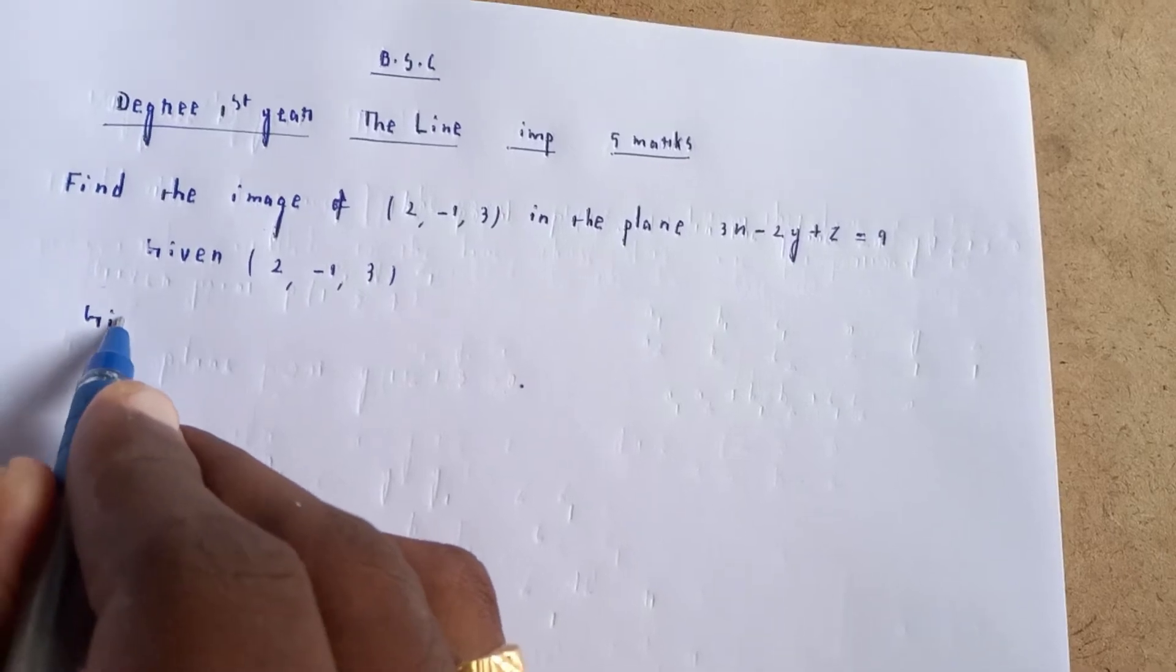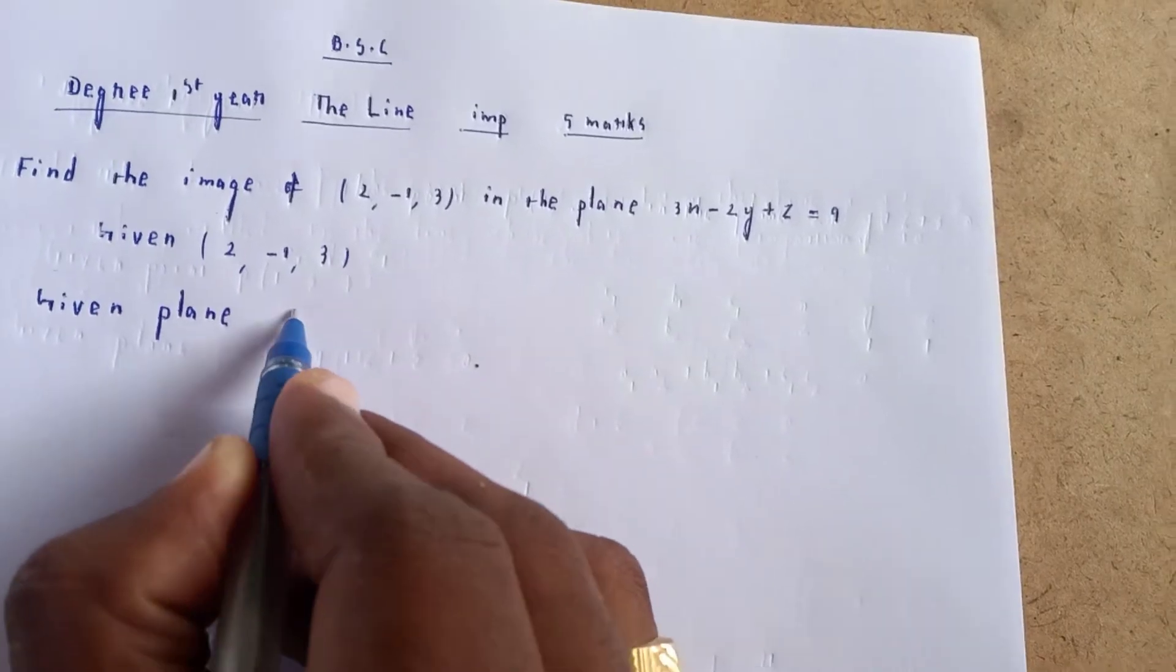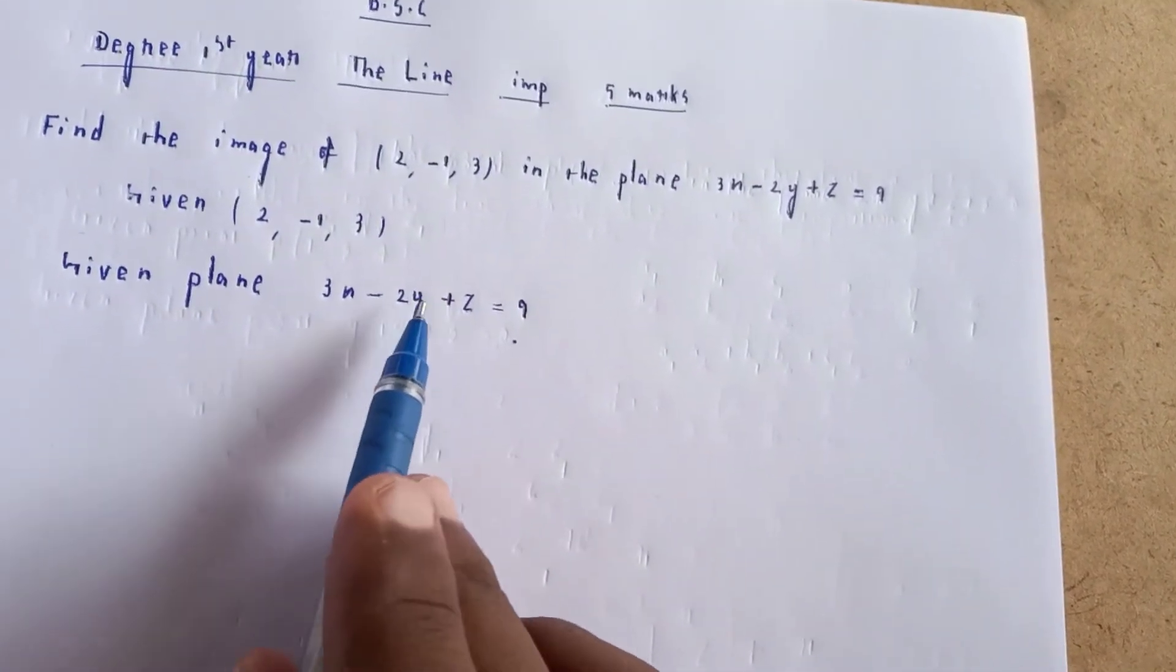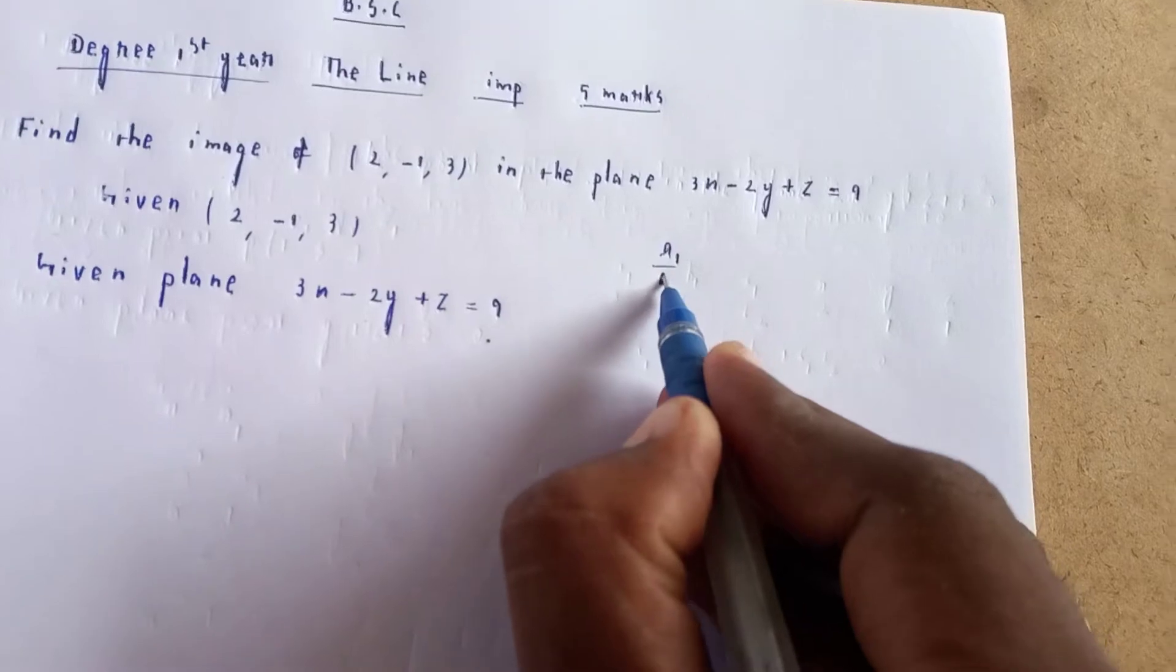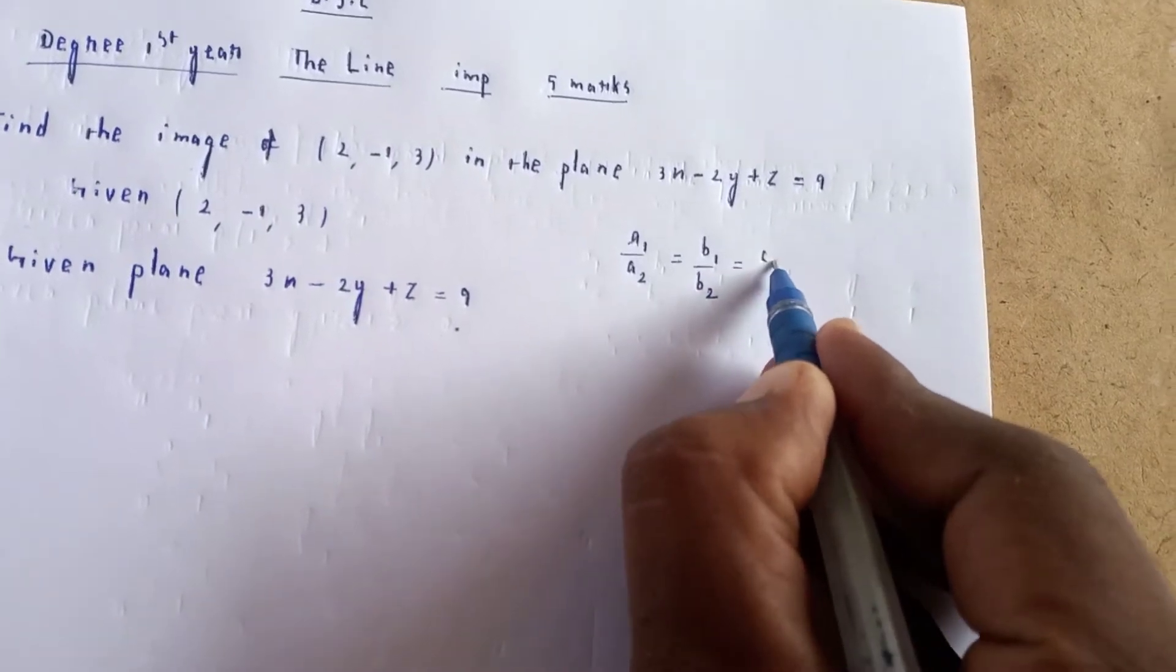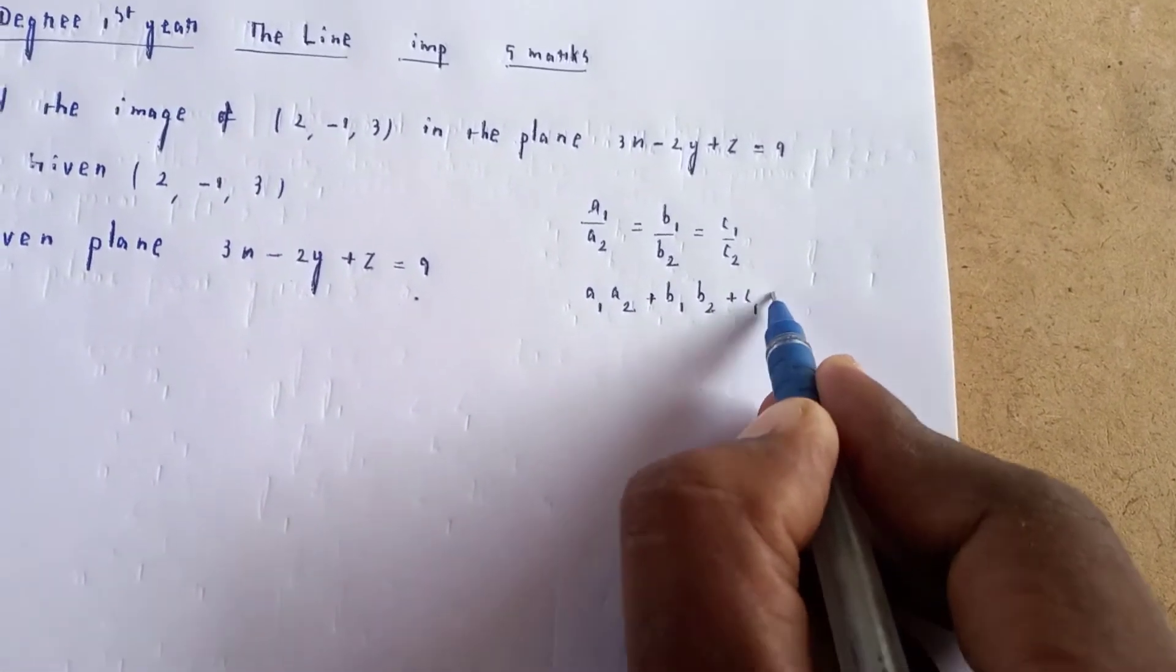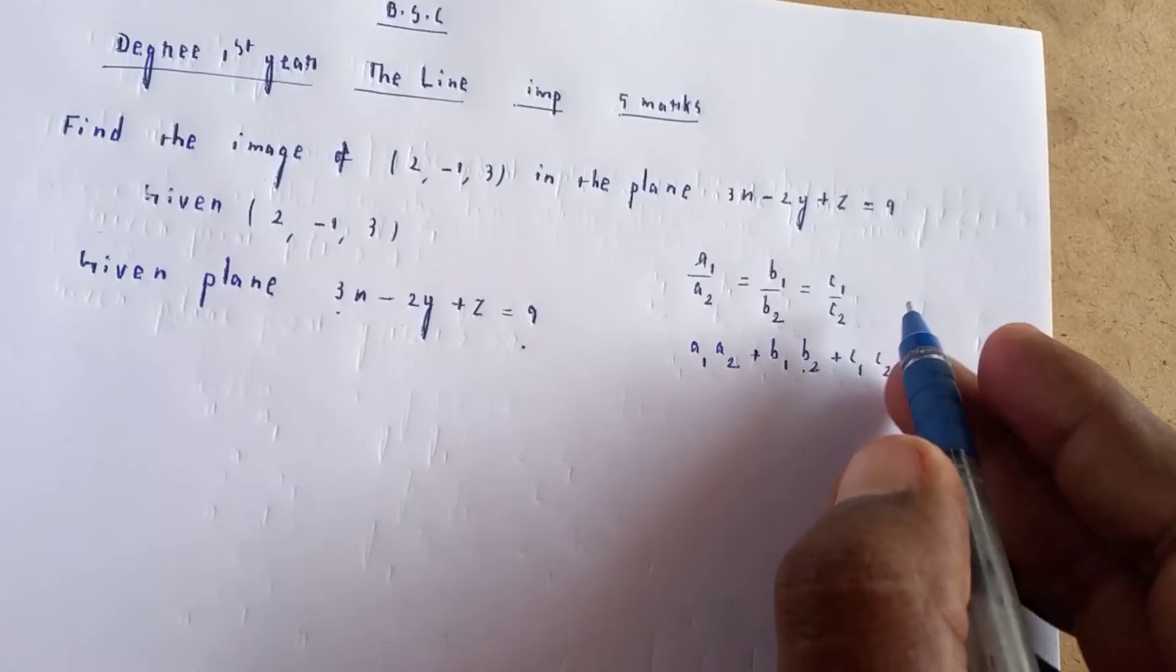The given point is (2, -1, 3), and the given plane is 3x - 2y + z = 9. For perpendicular equations, we use the condition: a1a2 + b1b2 + c1c2 = 0. For a line perpendicular to the plane, we use the coefficients.